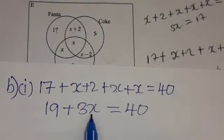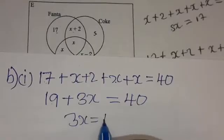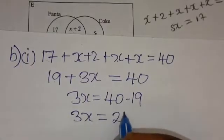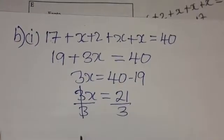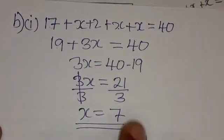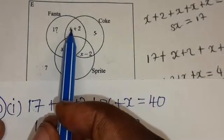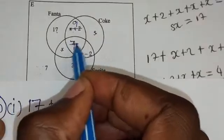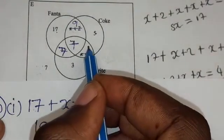We want to find the value of X, so we take 19 to the other side: 3X equals 40 minus 19, which is 21. Dividing both sides by 3, X equals 7. So wherever there is X in the Venn diagram, we put 7. X plus 2 gives 9 here, X gives 7 here and 7 here, and X minus 2 gives 5 here.